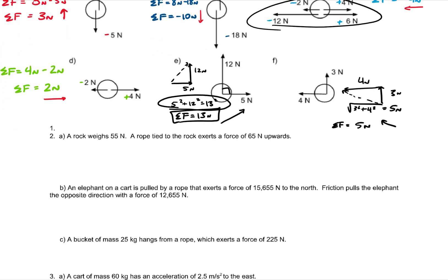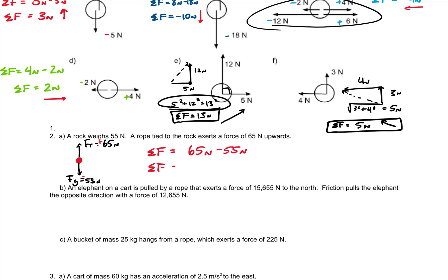Number 2: we have a rock that weighs 55 newtons with an upward force of 65 newtons. We make the upward force positive and the downward force negative. Net force is 65 minus 55, which comes out to 10 newtons. Since it's positive, that's 10 newtons up.